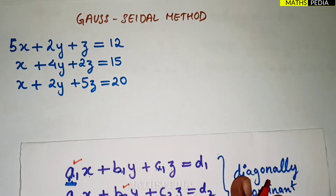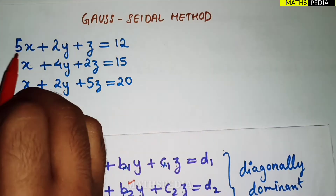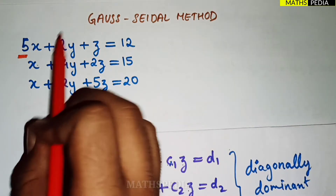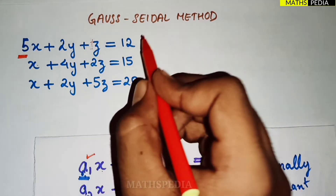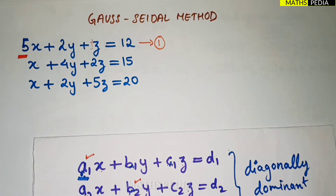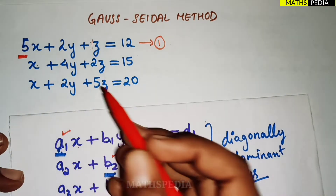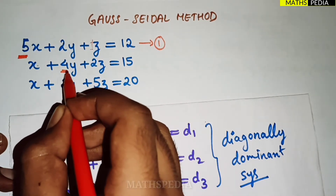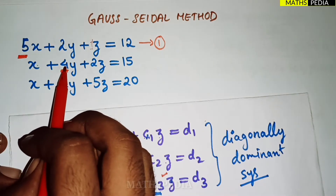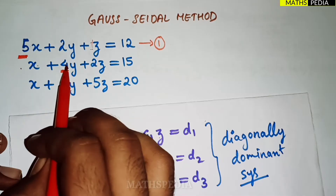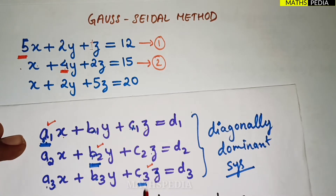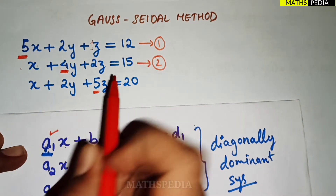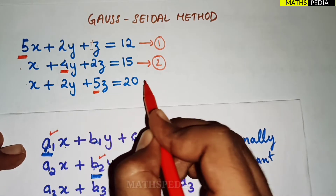Looking at the problem with three equations: in the first equation, the coefficient of x is 5, which should be greater than the other coefficients — 5 is greater than 2 and 5 is greater than 1. In the second equation, the coefficient of y is 4, which is greater than 1 and 2. In the third equation, the coefficient of z is 5, which is greater than 2 and 1. So these are our correctly ordered equations.